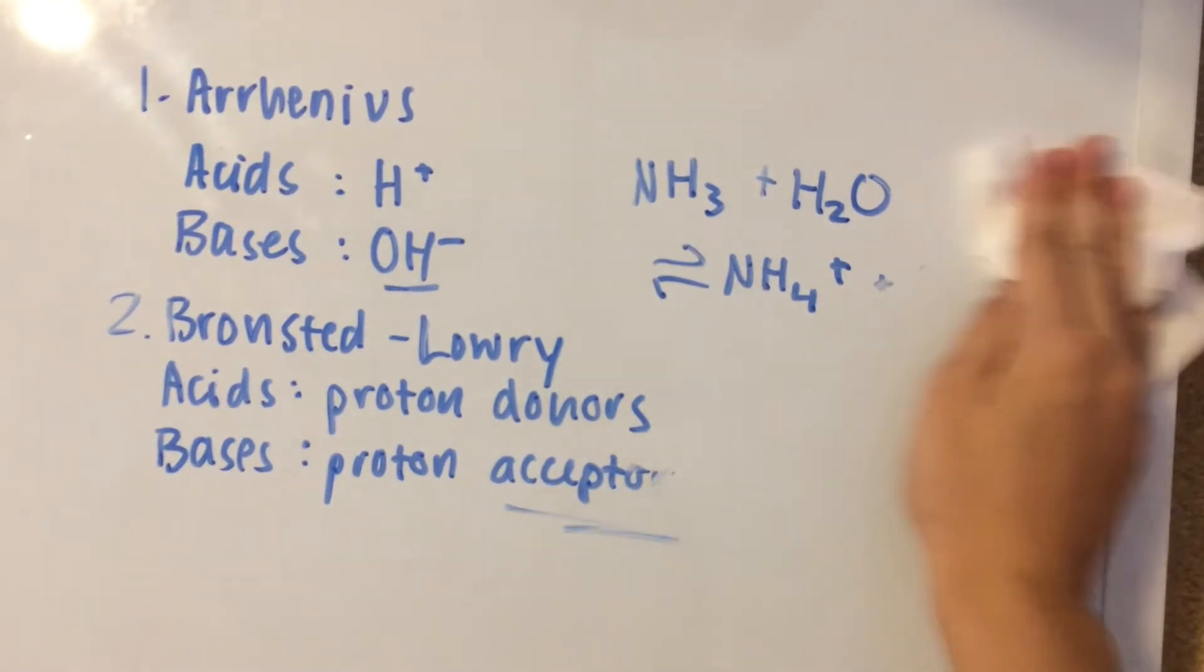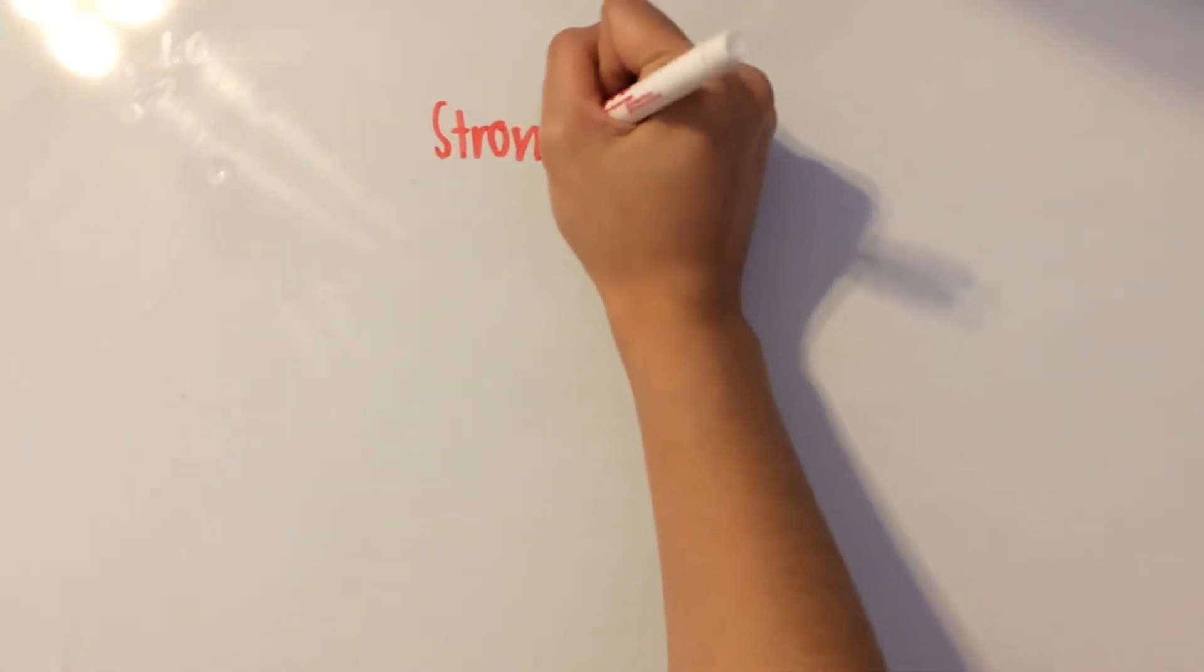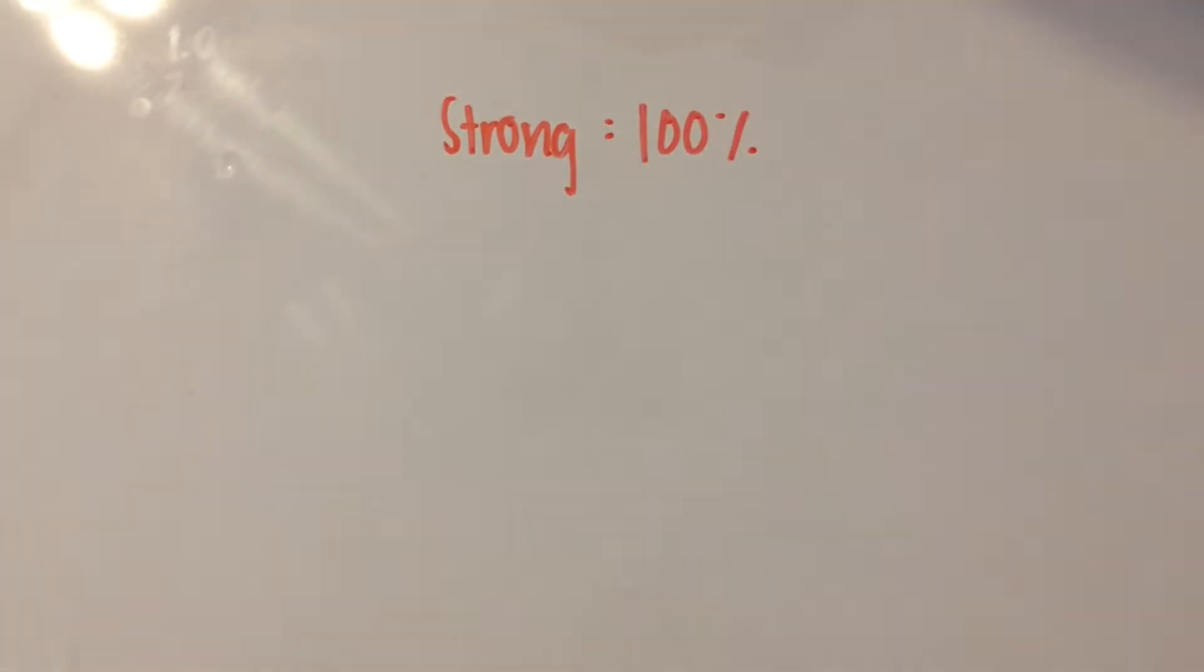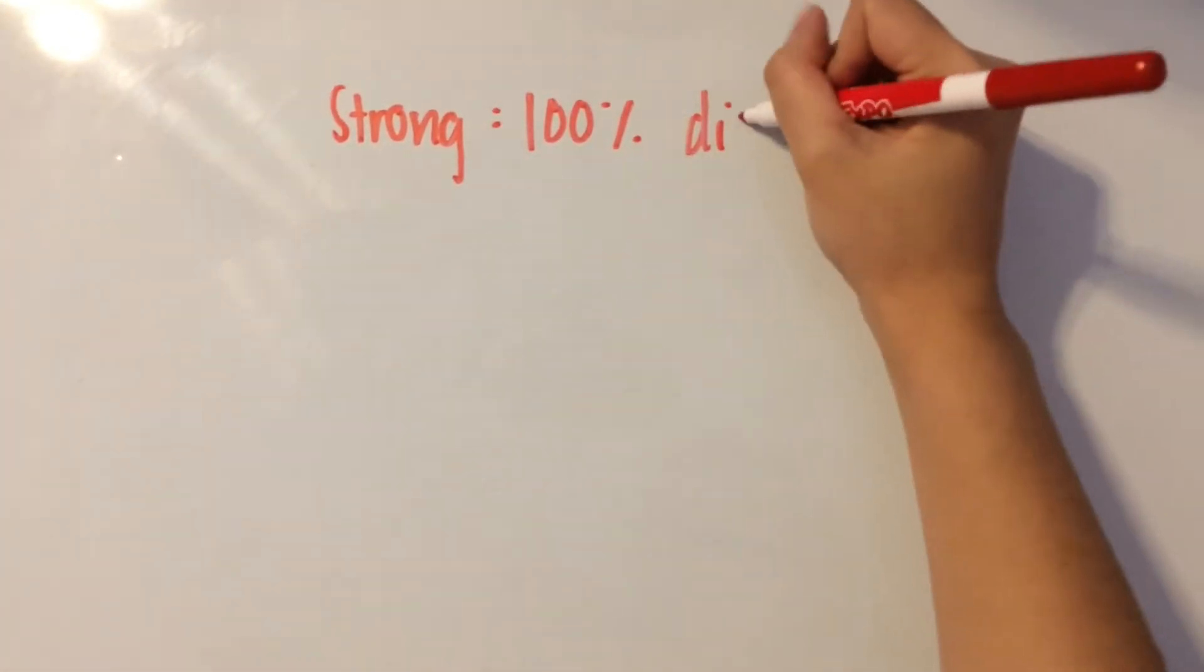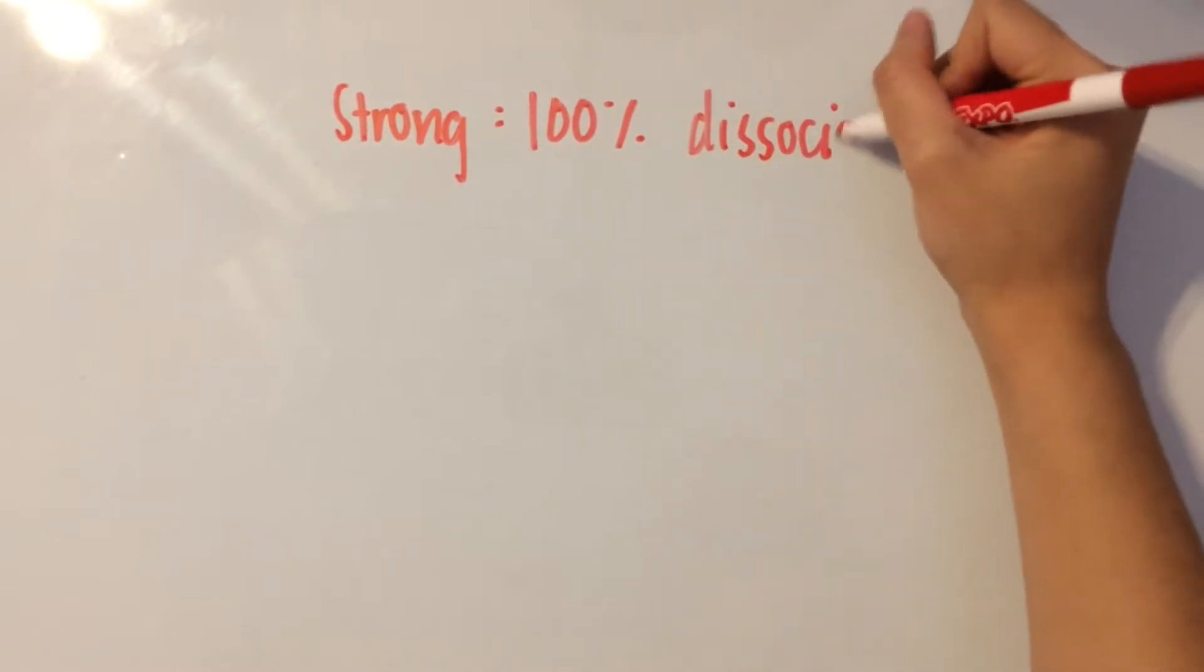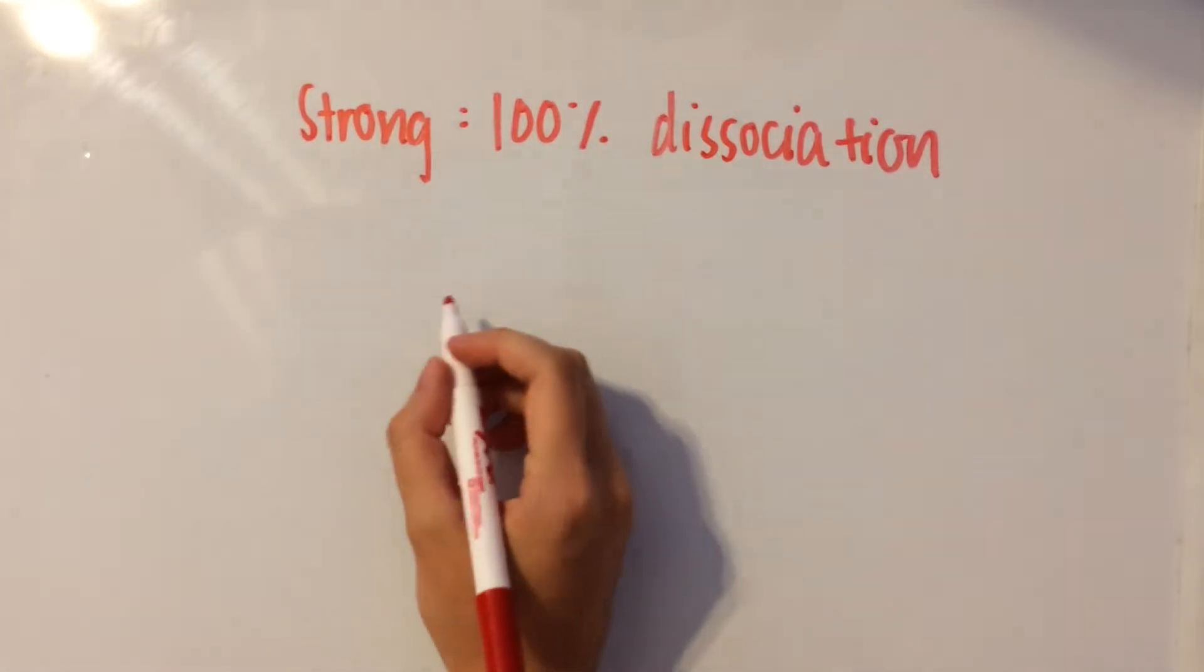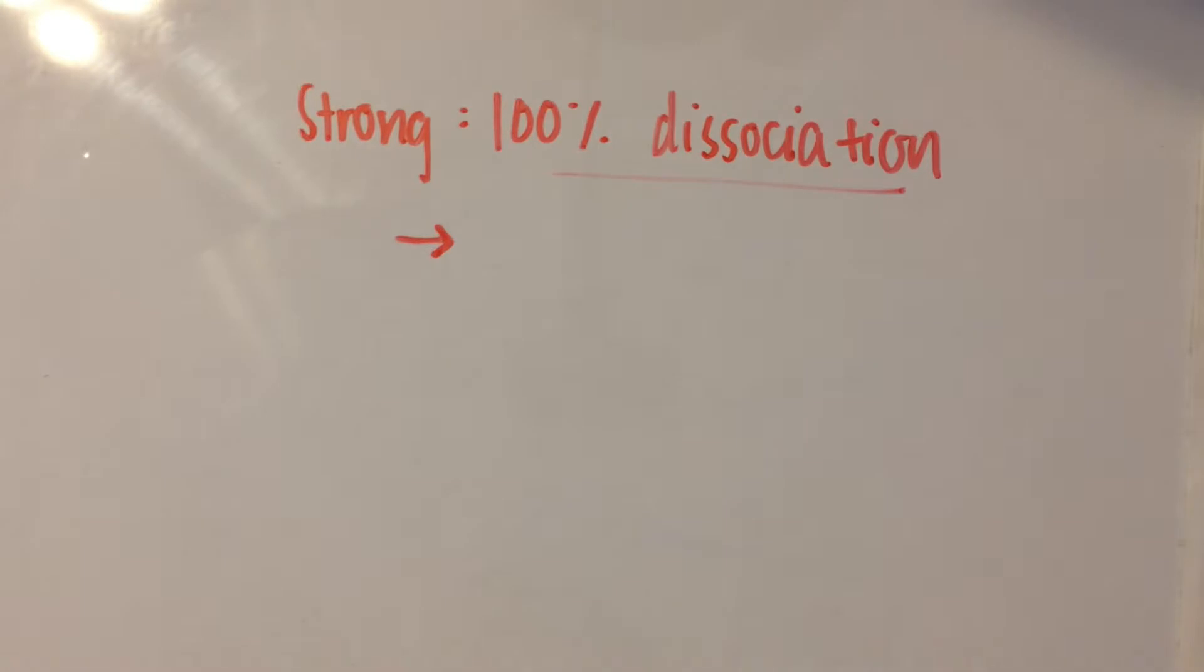Now there can be strong and weak acids and bases. What makes an acid strong or a base strong is that it dissociates a hundred percent. So a hundred percent dissociation. And we symbolize this hundred percent dissociation by using a solid arrow.